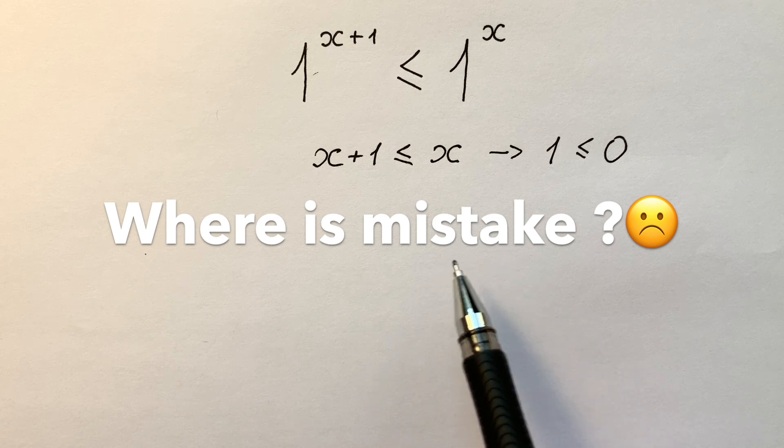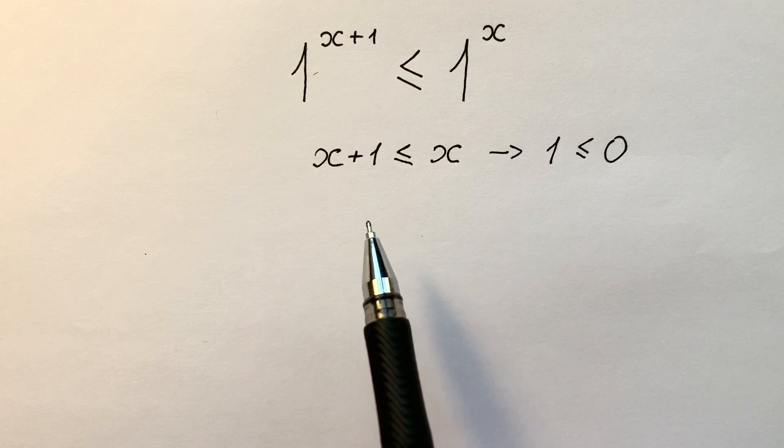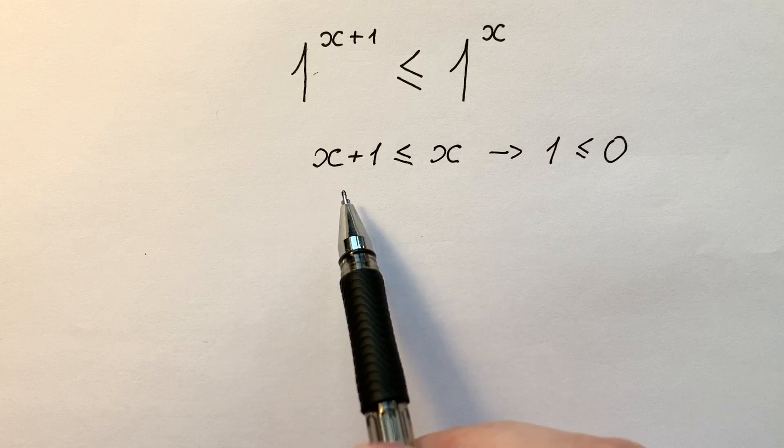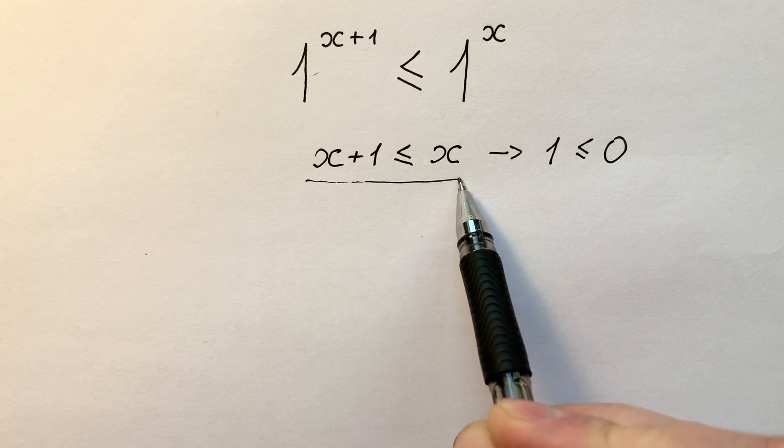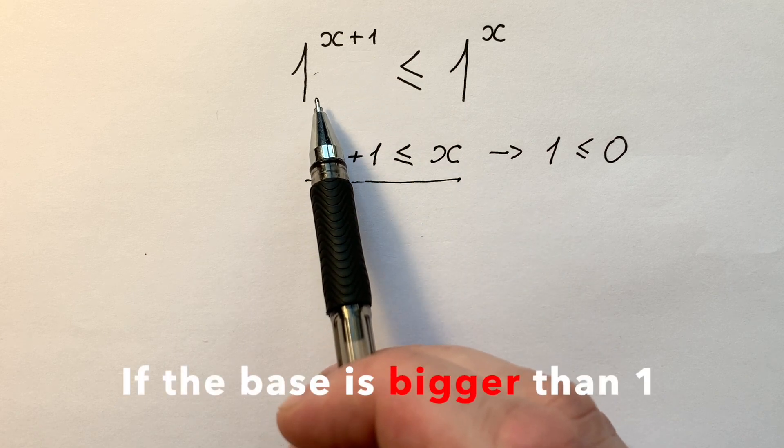Where is the mistake? It seems that we did everything right, but it's not so simple. We can compare powers in this way only in one case, if the base is bigger than 1.